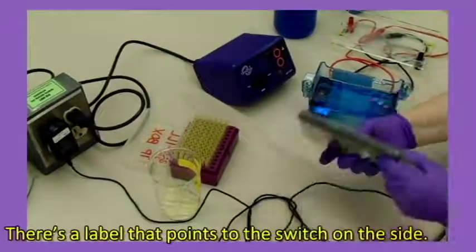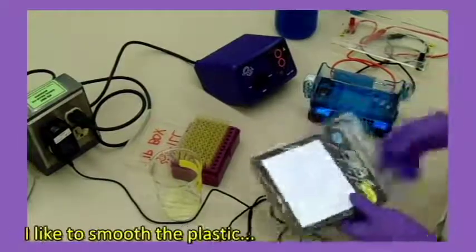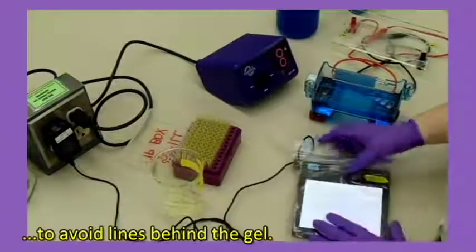There's a label that points to the switch on the side. Turn the light on and lay it flat on the table. I like to smooth the plastic to avoid lines behind the gel.